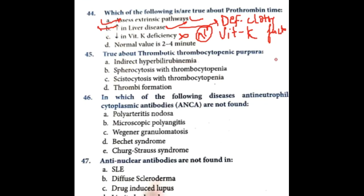True about thrombotic thrombocytopenic purpura (TTP): indirect hyperbilirubinemia — true, because of many thrombi formation and destruction of RBCs, hemolysis always relates to indirect hyperbilirubinemia. Schistocytosis with thrombocytopenia — true, schistocytes are seen, not spherocytes. Thrombi formation is also seen in TTP.